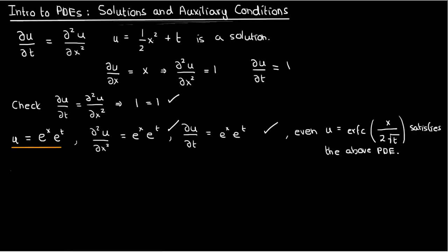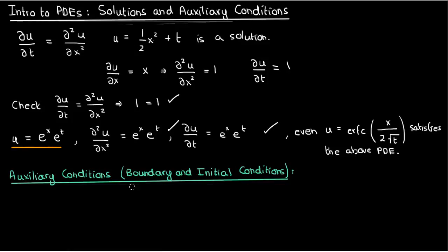With PDEs it's absolutely essential to know the auxiliary conditions, by which I mean the boundary and initial conditions, because these things aren't just important when it comes to specifying a unique solution, but in many cases the nature of the boundary and initial conditions dictates how you're going to solve the PDE. So if you don't have boundary and initial conditions you won't even know what technique to use when solving this problem.